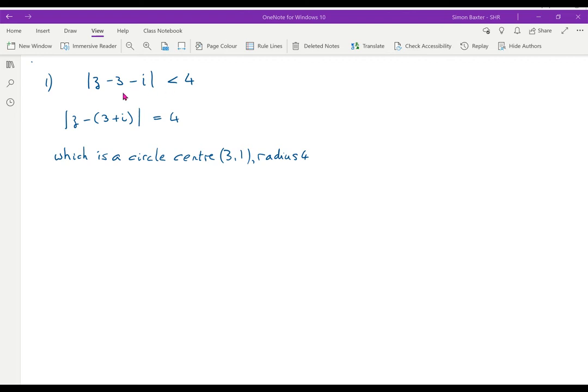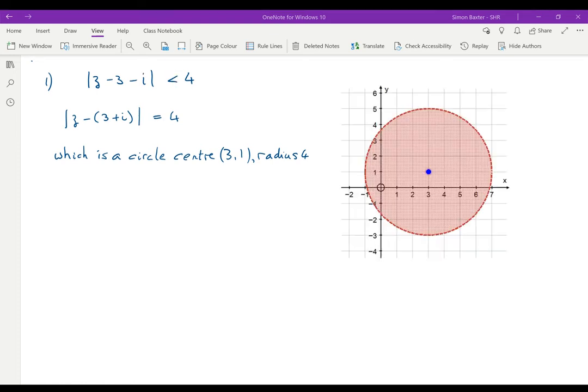So if we're looking for the distance from 3 plus i to be less than 4 we are looking inside the circle. Here we have a diagram showing a circle centre 3, 1, radius 4 and the inside area we want has been shaded. Because it is less than 4 the boundary is not included and so the boundary is dotted.